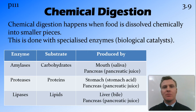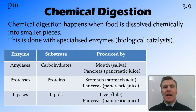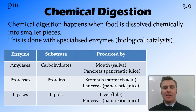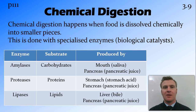We have proteases, which break down proteins, found in the stomach acid produced by the stomach as well as in the pancreatic juice produced by the pancreas. And lipases, which break down lipids, produced by the liver and found in bile, as well as again in pancreatic juice. So you can see that the pancreas produces all three different enzymes in its pancreatic juice.